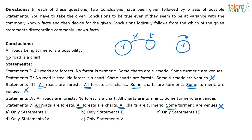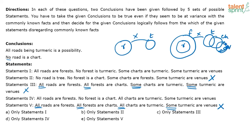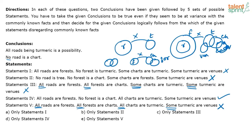Statement 1 says: all roads are forest, no forest is turmeric, some charts are turmeric, some turmeric are venues. The conclusion requires no road is chart. I know no forest is chart, no forest is turmeric, and no road is turmeric — but I don't know for sure that no road is chart. So this conclusion does not follow from statement 1. The correct answer must be statement 4.